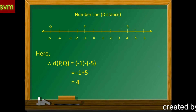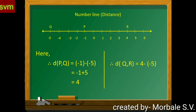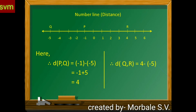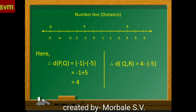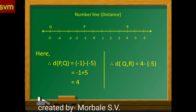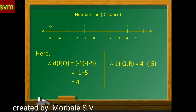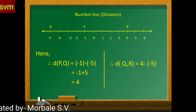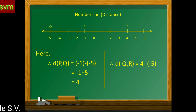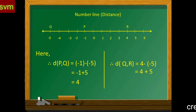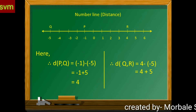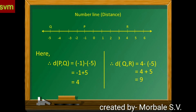Another example: coordinates plus 4 and plus 5. Distance between P and Q — coordinate of P is minus 5 and R is equal to 4. Then: 4 minus (minus 5) equals 4 plus 5, which equals 9.